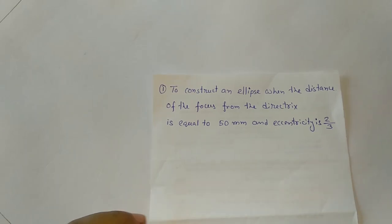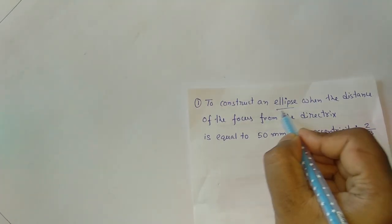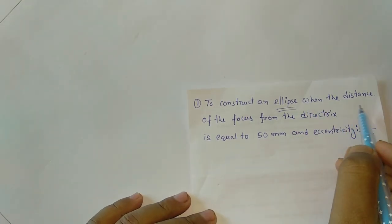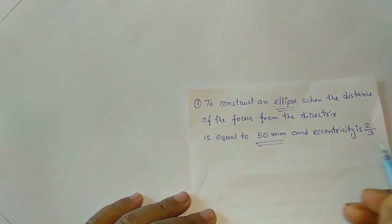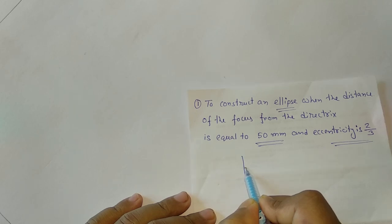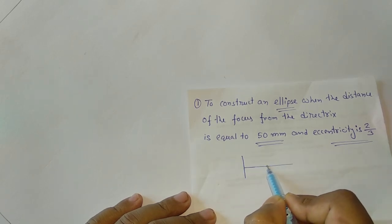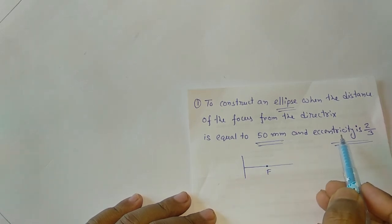In the last two videos I told about conic section and eccentricity. So how we can draw an ellipse when the distance of the focus from the directrix is equal to 50mm, and eccentricity is given as 2 by 3. This is the directrix, this is the line, and this is the focus F. This distance is given as 50.